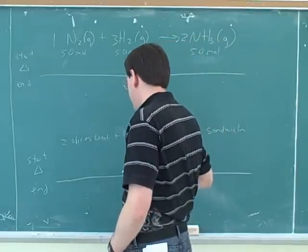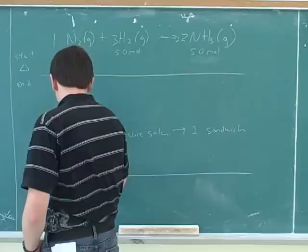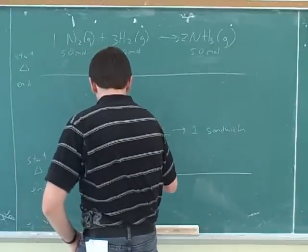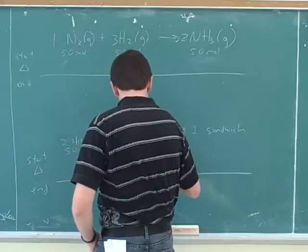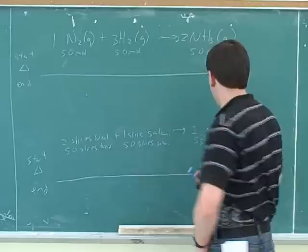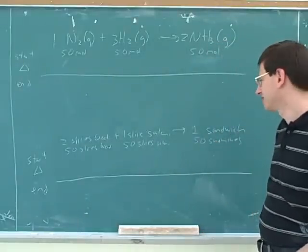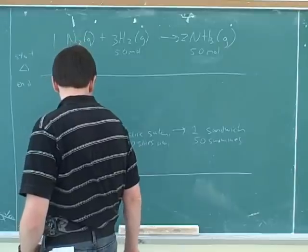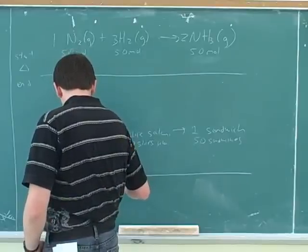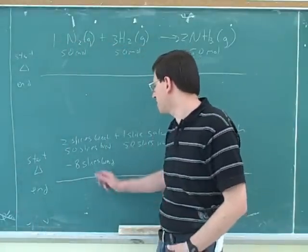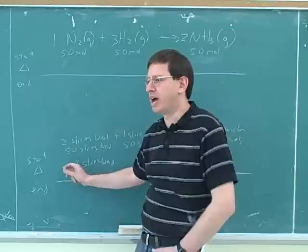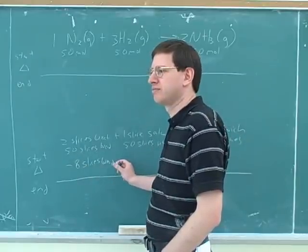Maybe we should stick with the sandwich equation though for a second. So let's say that we start with 50 slices of bread, 50 slices of salami, and 50 sandwiches. So we're supposing that I've already made a lot of sandwiches. And now let's suppose that I use up eight slices of bread to make more sandwiches. So notice that the change row has to have a sign, plus or minus. So should this sign be plus or minus?